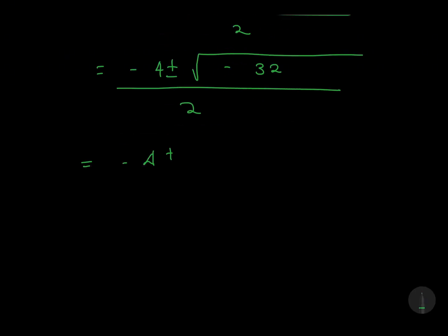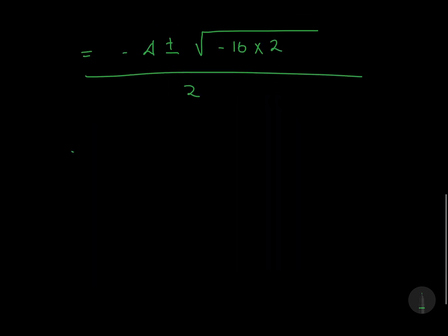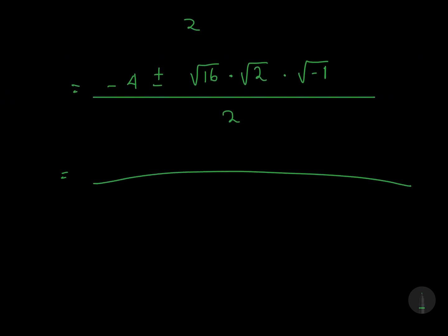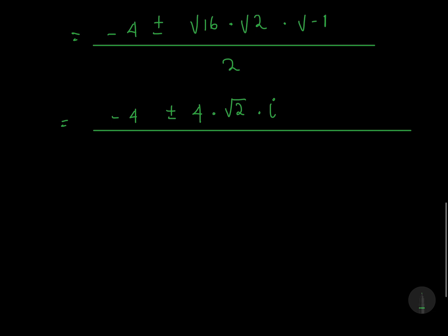Notice that -32 can be written as 16 times negative 2. This can be written as √16 times √2 times √(-1), if we separate them.